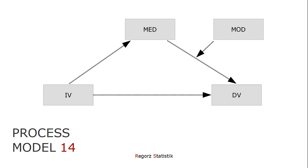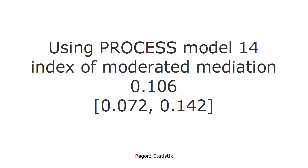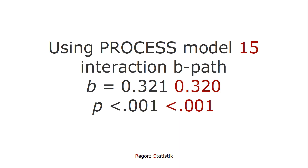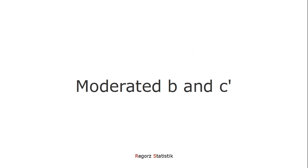The simulated dataset is produced using process model 14. With my simulated data, I get a significant moderation for the B path and a significant index of moderated mediation, because the confidence interval for the index of moderated mediation does not include zero. Now comparing this with the results from using process model 15 for the same data — the data where process model 14 is the correct model — I get basically the same result for the interaction. The index of moderated mediation is also more or less the same. In this case, it doesn't matter whether I use process model 14 or process model 15: both give the same results.